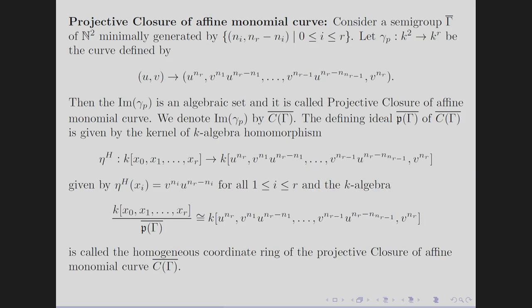The projective closure of an affine monomial curve is defined using a semigroup generated by (nᵢ - nᵣ, nᵣ - nᵢ). The defining ideal of the projective closure is given by the homomorphism ηₕ, and the defining ideal of the closure P(Γ̄) is nothing but the homogenization of the defining ideal of the affine monomial curve. The Krull dimension of the homogeneous coordinate ring of this projective closure is 2, so it need not be Cohen-Macaulay, whereas affine monomial curves are always Cohen-Macaulay.